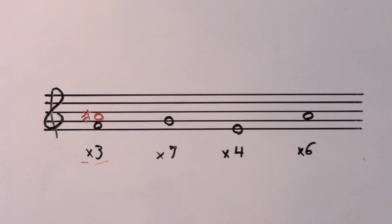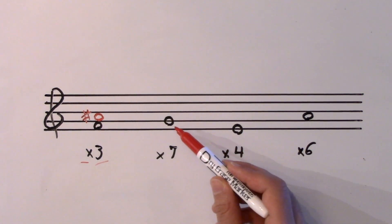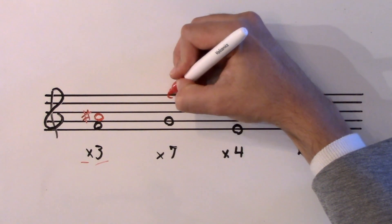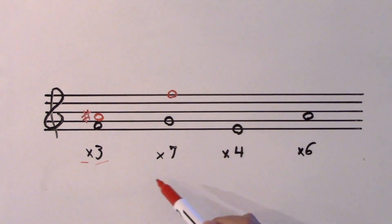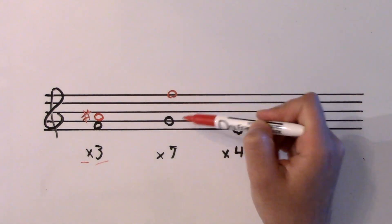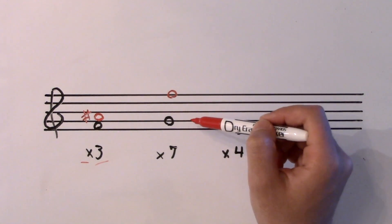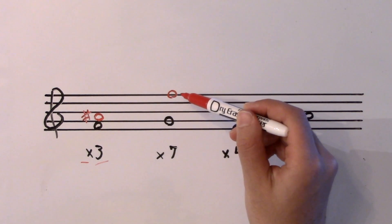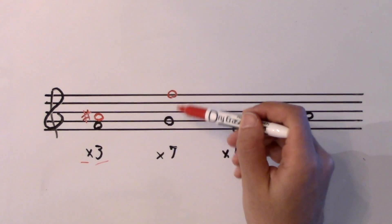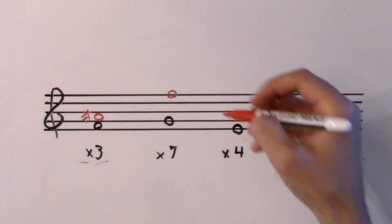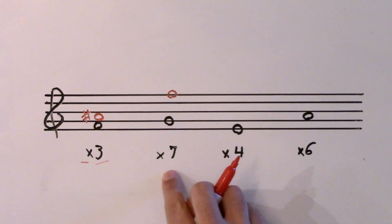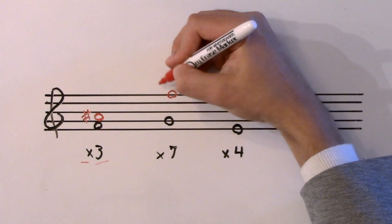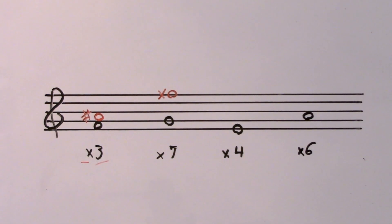Now an augmented seventh. Step one: a seventh above G is F. Now let's figure out the quality. This is a minor seventh — the seventh note of a G major scale is F sharp, and this is F natural, which is smaller. So not only do I need to increase this interval to become major, I then need to increase it again to become augmented. Adding a sharp would give a major seventh; I need one extra step upwards — a double sharp symbol. Now this is an augmented seventh.